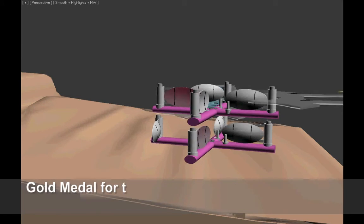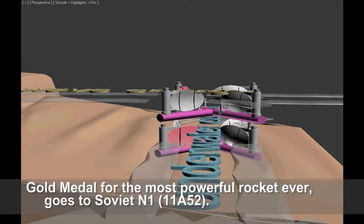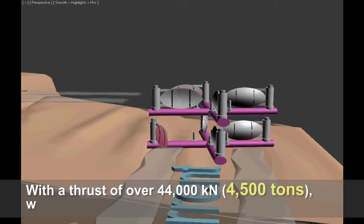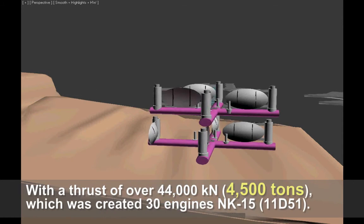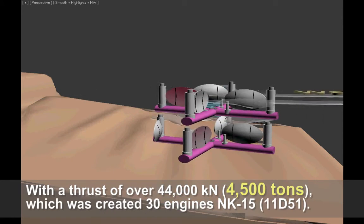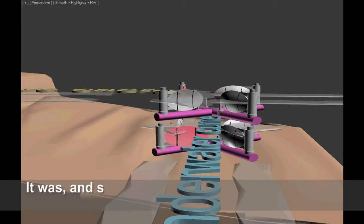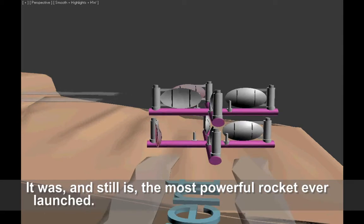To know what is the amount of thrust 7,500 tons, here is comparison. Gold medal for the most powerful rocket ever goes to Soviet N-1, 11A-52. With a thrust of over 44,000 kilonewtons, 4,500 tons, which was created by 30 engines NK-15, 11D-51. It was and still is the most powerful rocket ever launched.